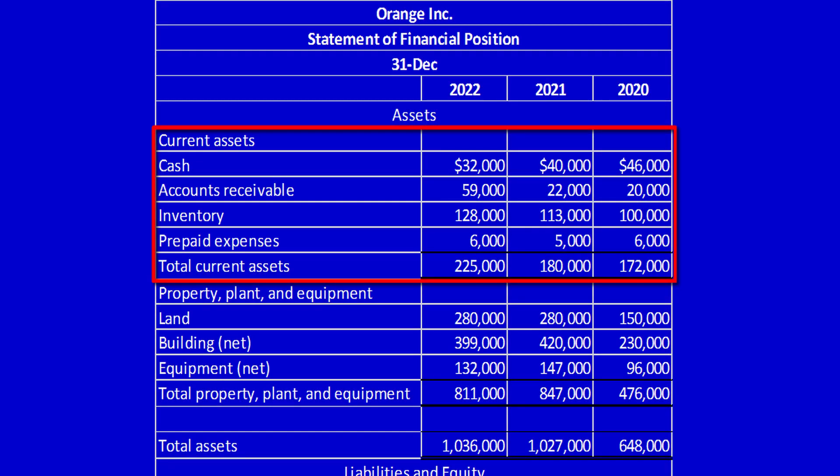Maybe the accounts receivable takes a long time to collect or the inventory sells slowly, if at all. Inventory is already harder to turn into cash because we have to sell it. And the prepaid expenses? They'll never be turned into cash. Prepaid expenses are used or consumed over time, not converted.